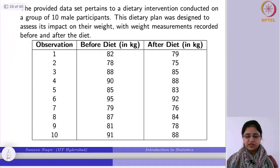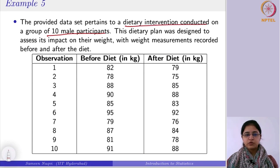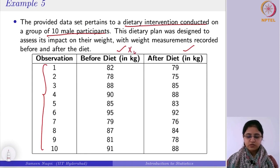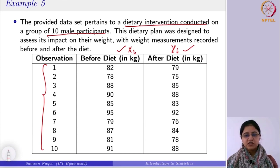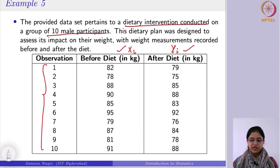Now let us see an example. Suppose you have a group of 10 male participants in a dietary intervention, designed to assess its impact on weight. The weights before diet and after diet are given — on the same set of 10 individuals. So they are dependent. These are your x_i's (before diet) and y_i's (after diet). Just by looking at the data you can immediately identify this as a dependent dataset, so you would not use the independent two-sample result.